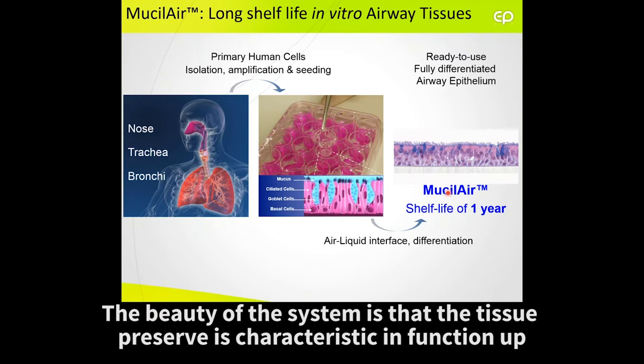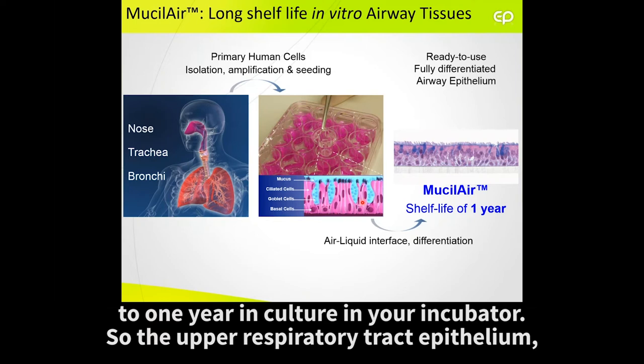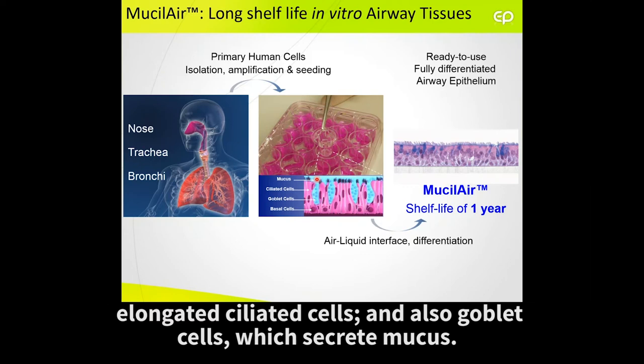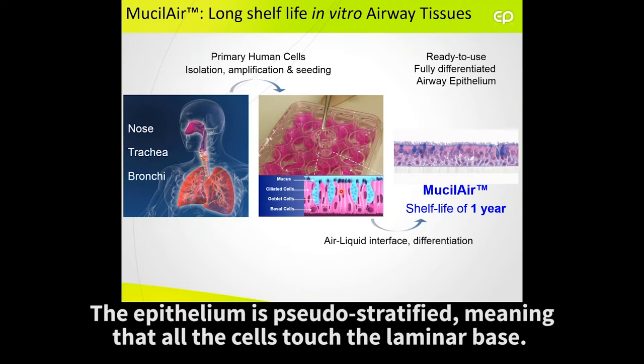The beauty of this system is that the tissue preserves its characteristics and function up to one year in culture in your incubator. The upper respiratory tract epithelium, namely the MucilAir system, is made of three types of cells: the basal cells, which are the progenitor cells, elongated ciliated cells, and also goblet cells, which secrete mucus. The epithelium is pseudostratified, meaning that all the cells touch the laminar basis. We can produce standardized MucilAir systems from single donors or pools of donors.